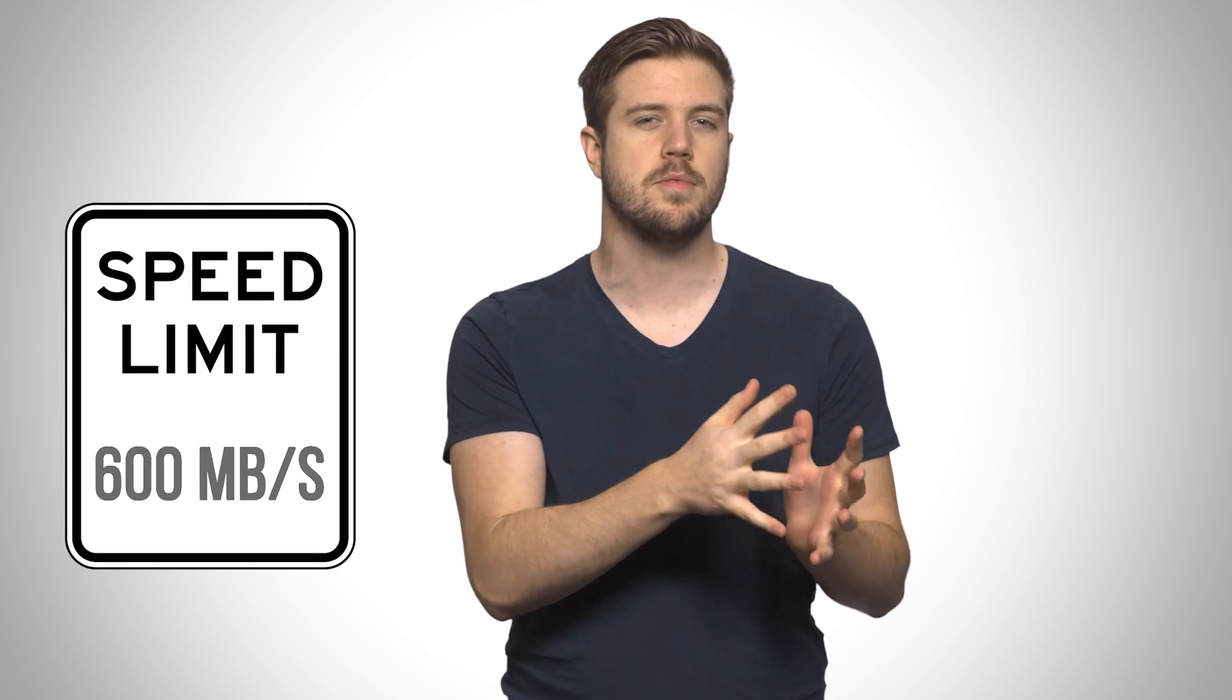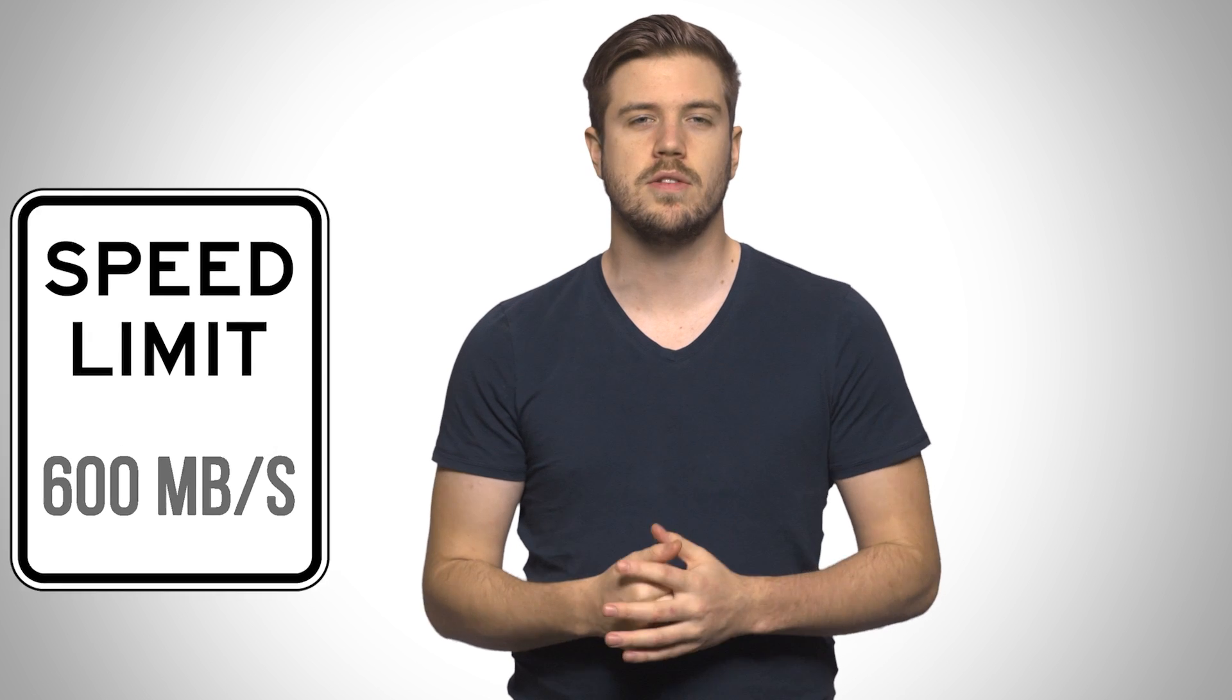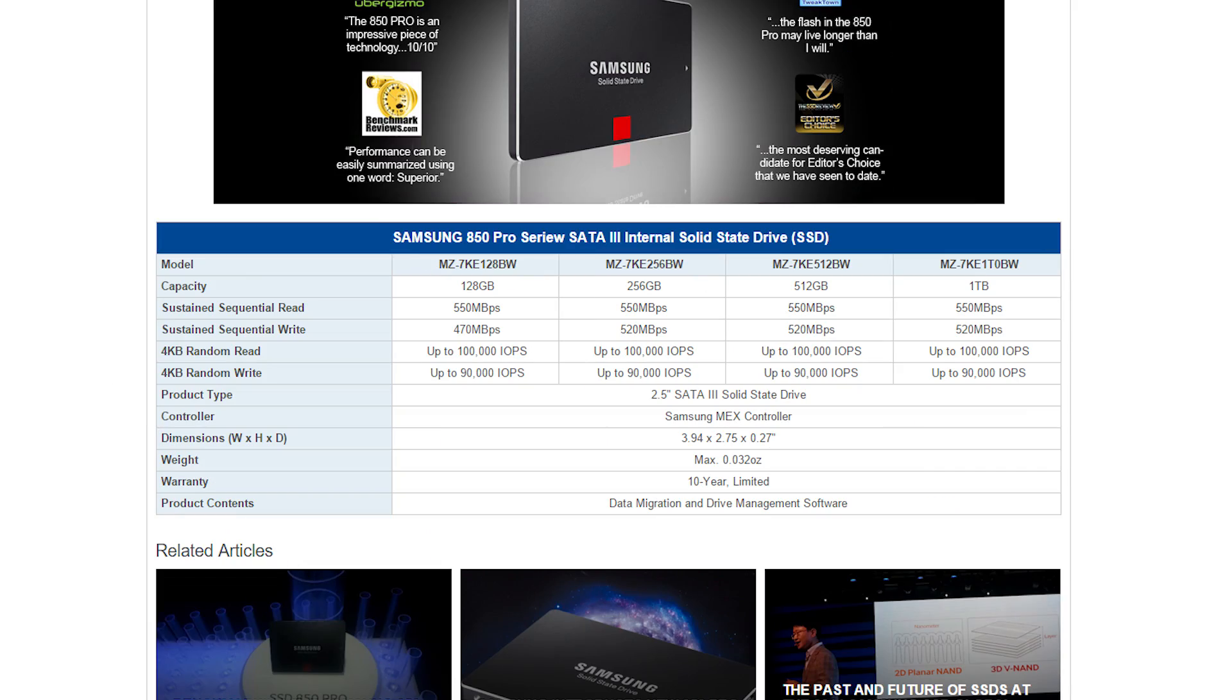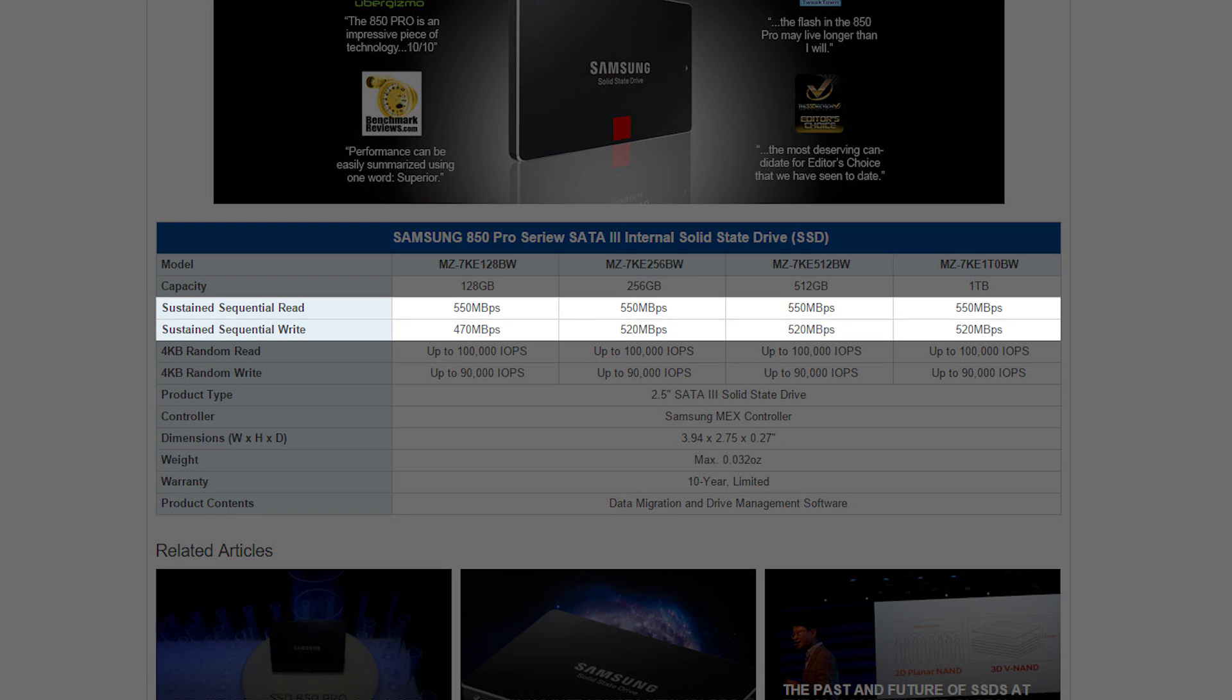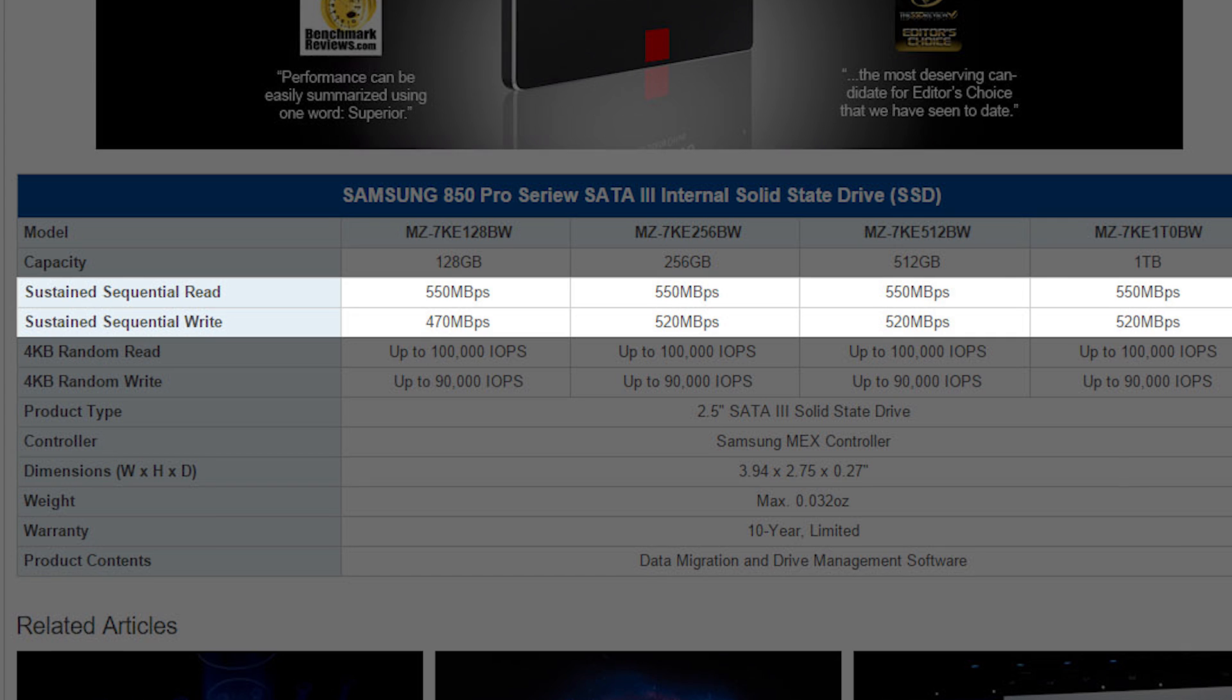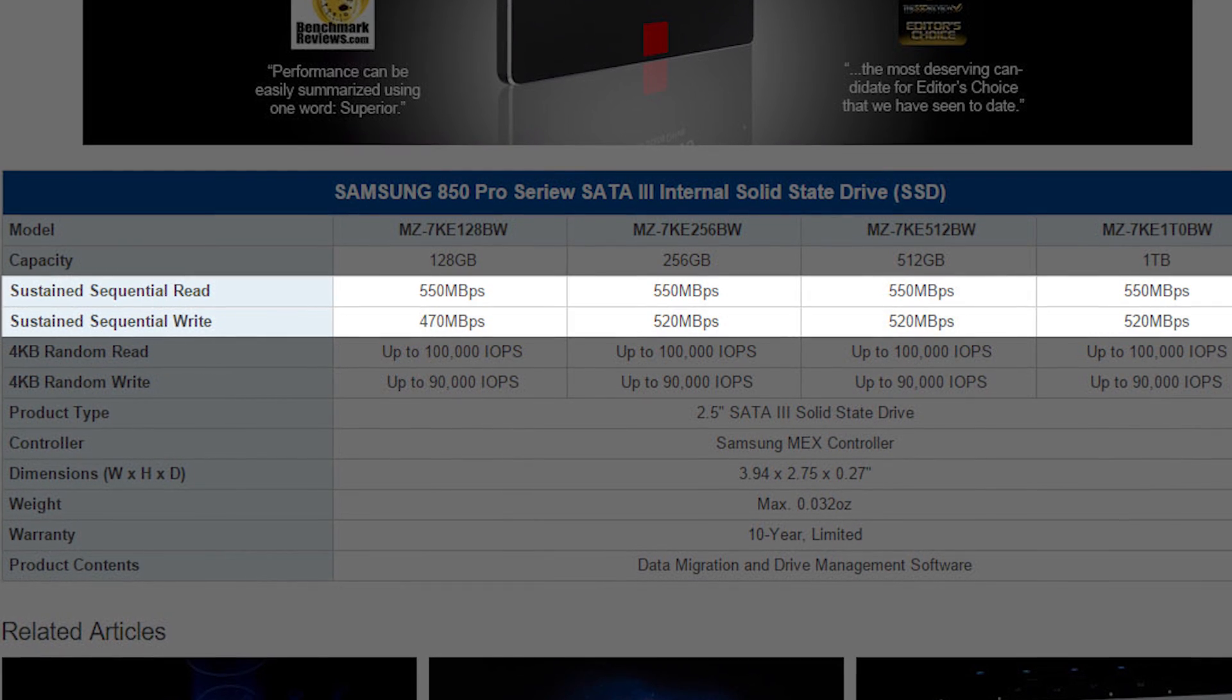First, SATA has an upper transfer limit of about 600 megabytes per second. Flash storage tech used in SSDs has been capable of much faster speeds for quite a while, but because of the SATA speed limit, even top-end SATA 3 drives won't advertise or give you speeds higher than 600 megabytes per second max.